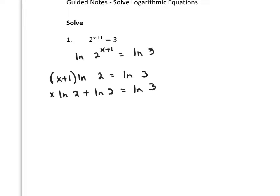What am I trying to solve for? I'm trying to solve for x. Let's isolate this term on one side by subtracting ln 2 from both sides. We want to solve for x, so divide both sides by ln 2.